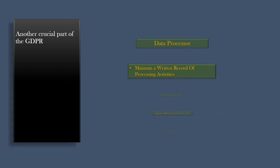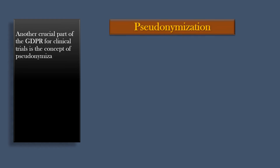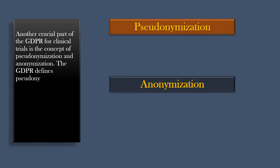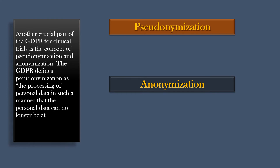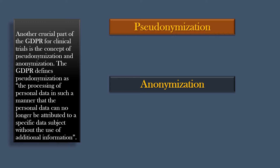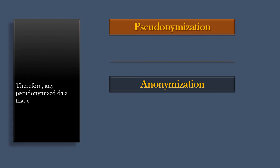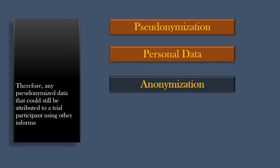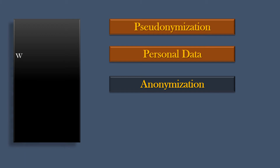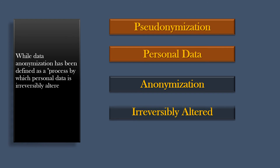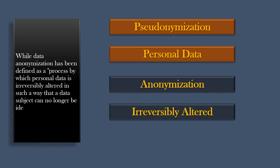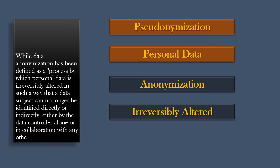Another crucial part of the GDPR for clinical trials is the concept of pseudonymization and anonymization. The GDPR defines pseudonymization as the processing of personal data in such a manner that the personal data can no longer be attributed to a specific data subject without the use of additional information. Therefore, any pseudonymized data that could still be attributed to a trial participant using other information will be considered as personal data. While data anonymization has been defined as a process by which personal data is irreversibly altered in such a way that a data subject can no longer be identified directly or indirectly, either by the data controller alone or in collaboration with any other party.